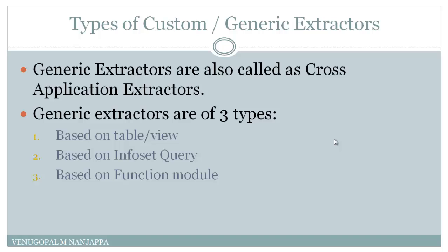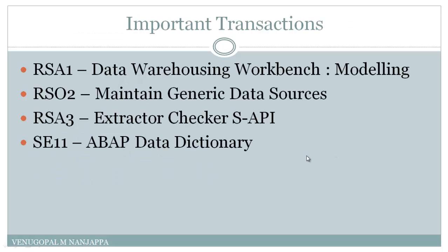These are the important transactions we come across while creating or testing a generic extractor. RSA1 is the BW workbench used for modeling. RSO2 is the transaction to maintain and create generic data sources. RSA3 is used to check or test the extractor we have created — we can also test standard extractors from RSA3. SE11 is the data dictionary transaction where we can create tables, views, etc.